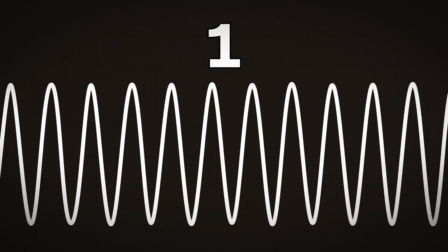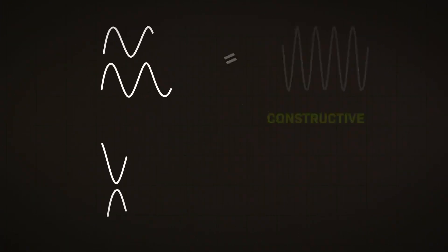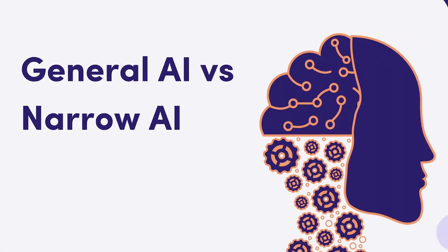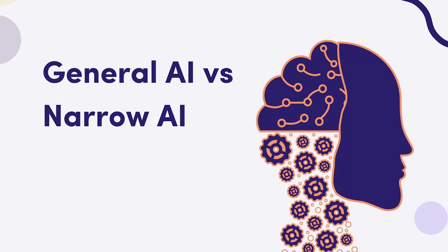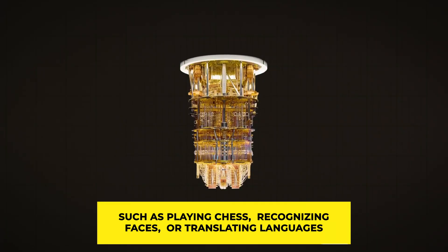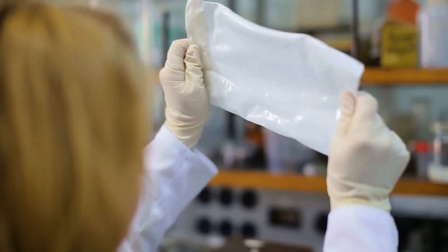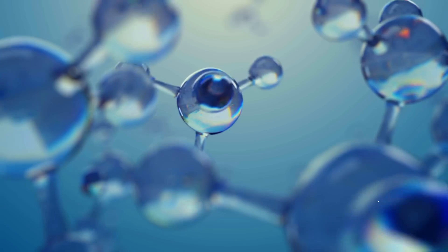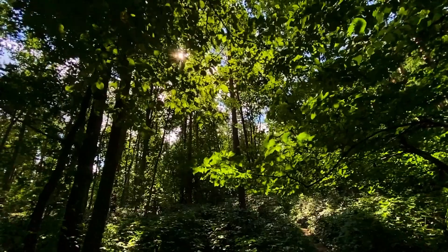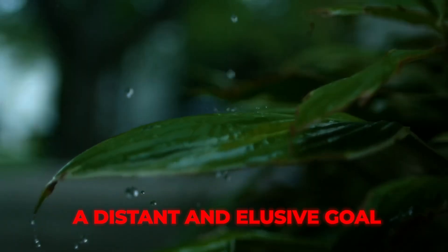These challenges make quantum computing very fragile and unstable, requiring sophisticated methods of error correction and fault tolerance. Artificial intelligence is the field of computer science that aims to create machines and systems that can perform tasks normally requiring human intelligence, such as learning, reasoning, and decision making. AI can be divided into two main categories: narrow AI, which performs specific well-defined tasks like playing chess, recognizing faces, or translating languages, and general AI, which can perform any task a human can do and potentially surpass human intelligence.